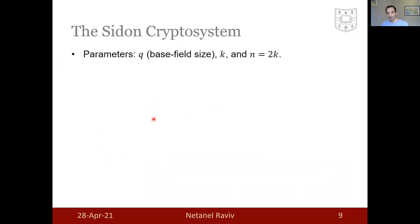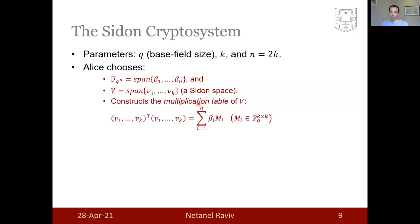Therefore, our idea here is to publish the multiplication table V of a secret Sidon space without revealing its identity. This happens as follows. The parameters of the system are q, the base field size, k, the dimension of the Sidon space, n here would be just 2k. Alice begins by choosing a construction for the extension field and a basis, a construction of some Sidon space, and a respective basis. Then Alice will construct the so-called multiplication table of V, which is this basis transpose times itself.